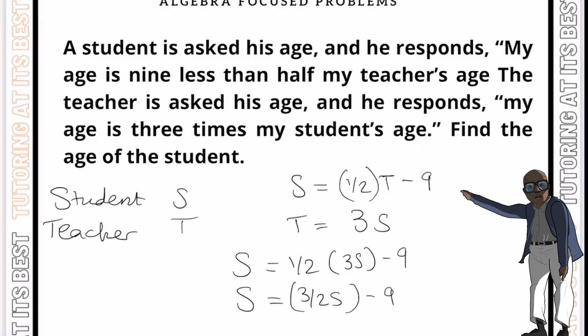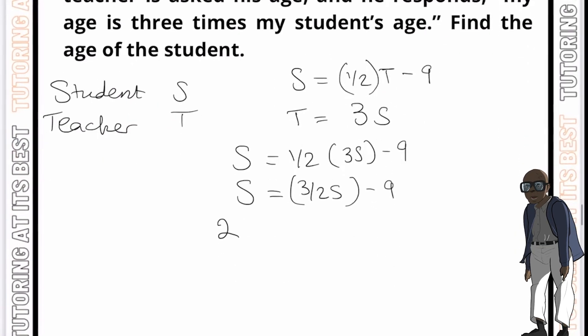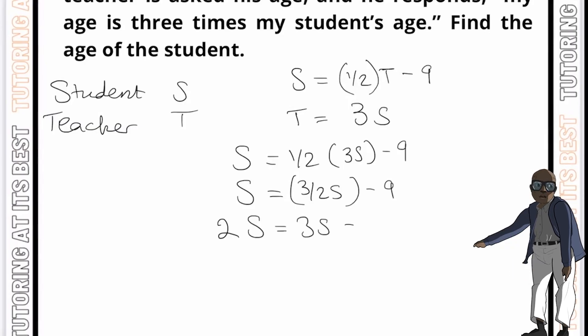And now again, if we make S the subject here, I'm going to multiply both sides by two to get rid of this fraction. So then I am now left with two S equals three S minus 18.